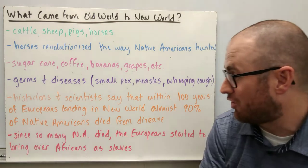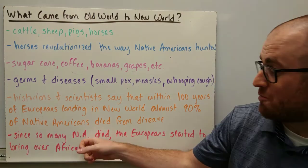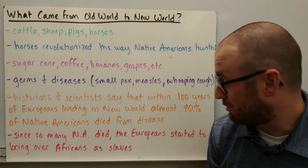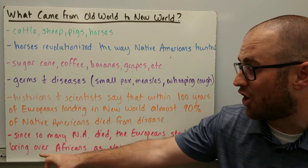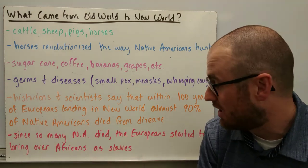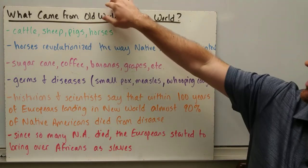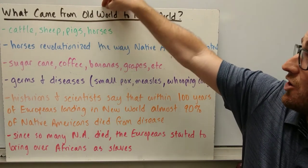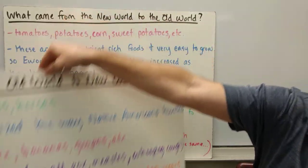That's pretty unreal. So since so many Native Americans died, here come the people — the Europeans started to bring over Africans that they captured off the African coast and brought them over as slaves, since they couldn't enslave the Native Americans because most of the natives had died.